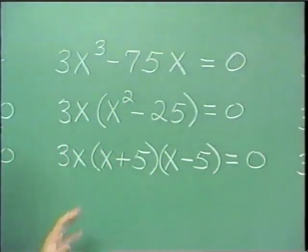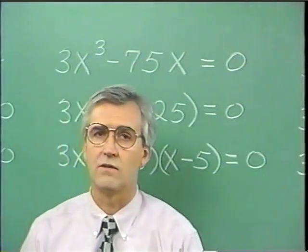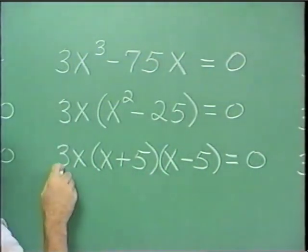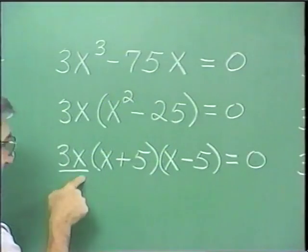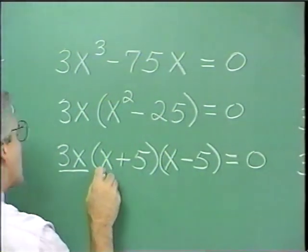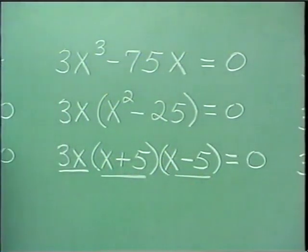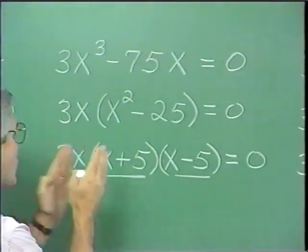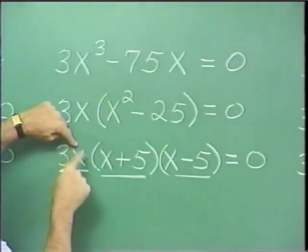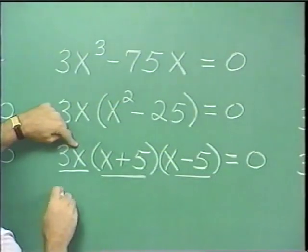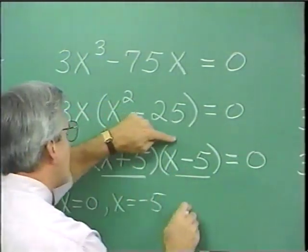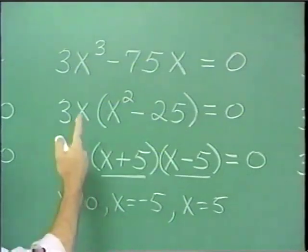Once we are in a factored form, we ask: what value of x will cause each factor to become zero? Thinking of 3x as a common factor, x plus 5 is a factor, and x minus 5 is a factor. If x is replaced with zero, then zero times 3 makes that factor zero, so x equals zero is a solution. This factor is zero when x is negative 5, and that factor is zero when x is 5. So we have three solutions to this equation.